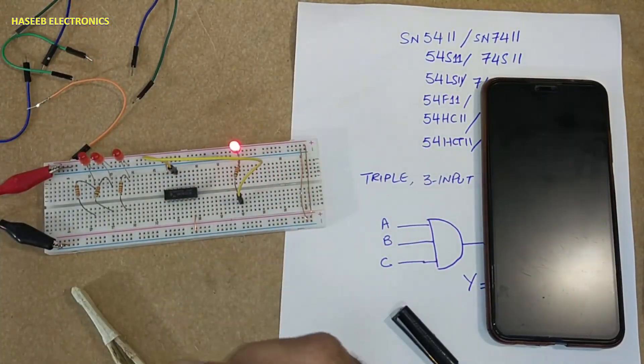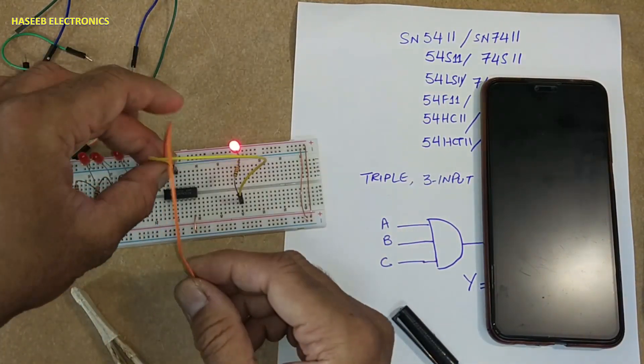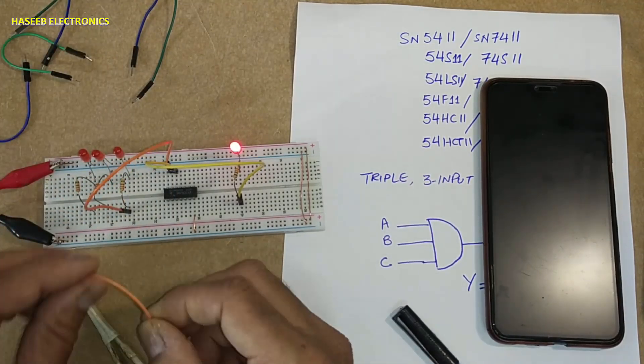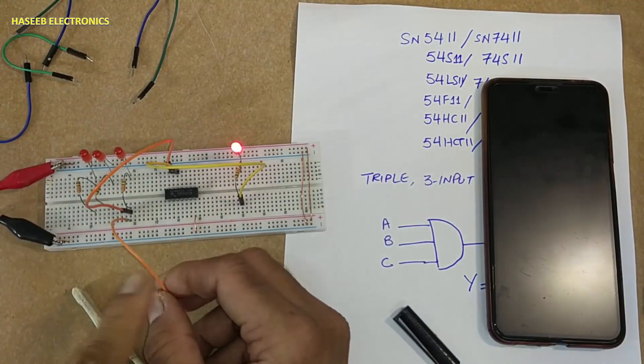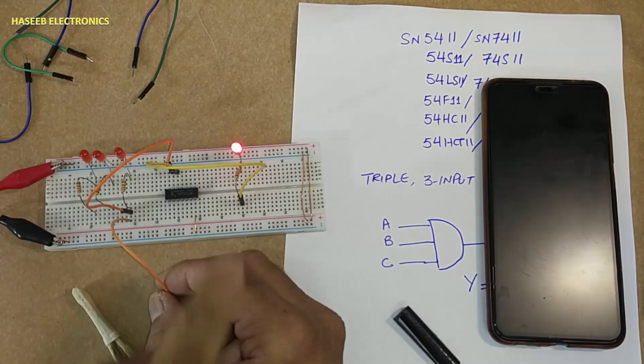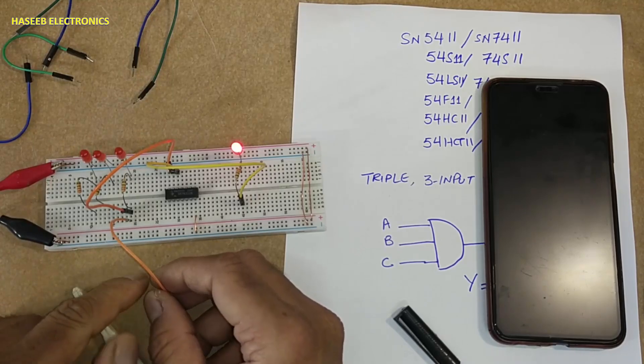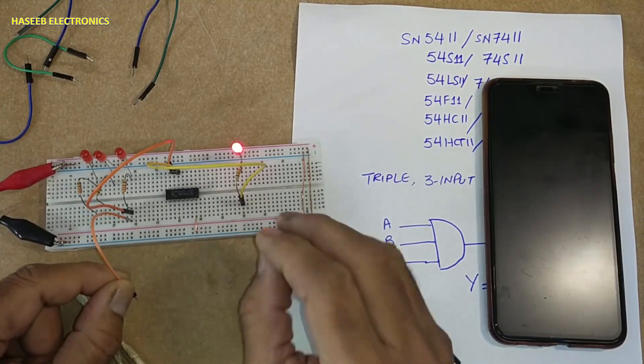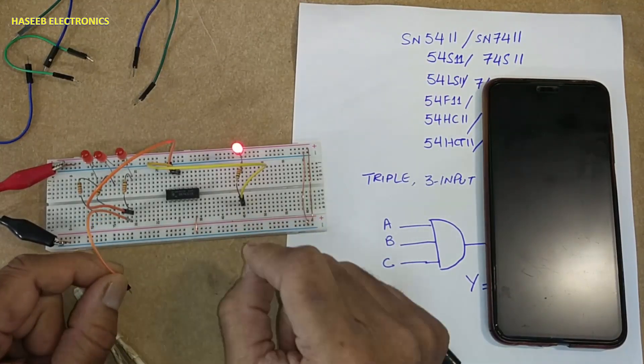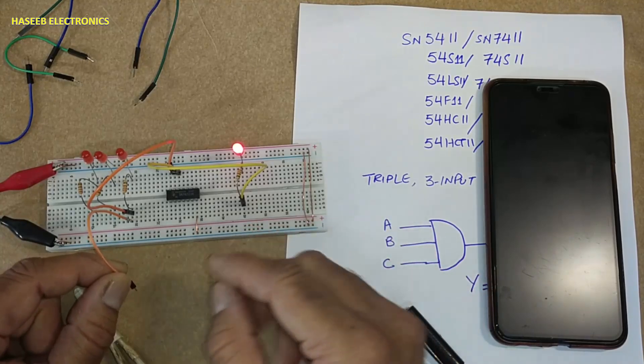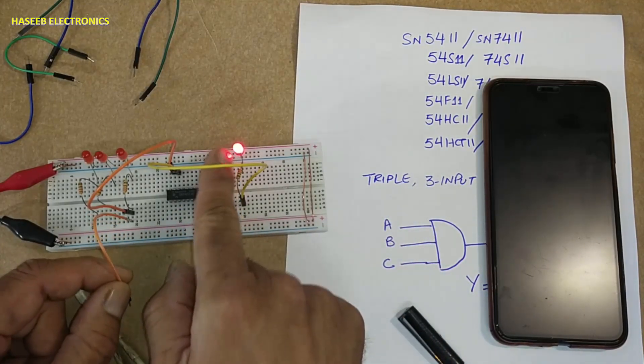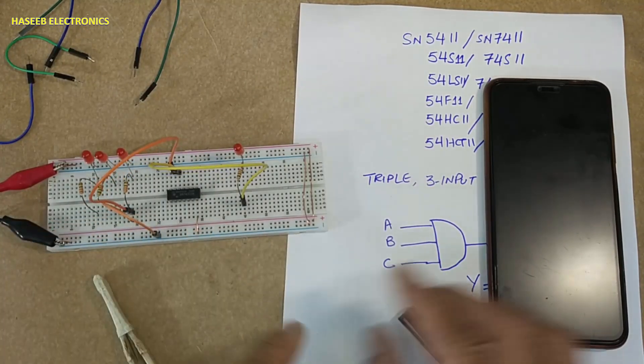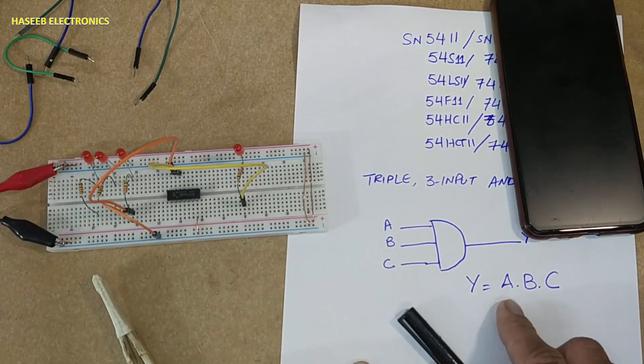This is output, pin number 12. Pin number 13 is input. I will connect to low. I did not apply any input but it is giving high output. Why? Because it is a TTL IC logic IC. Open input of any logic IC is considered high, so that is the reason it is providing high output.